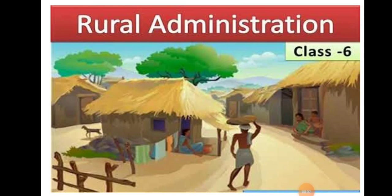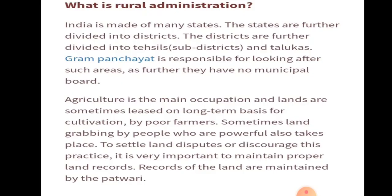Good morning, students. Today we will start chapter number five in civics: Rural Administration. What is rural? Rural means an underdeveloped area like a village.